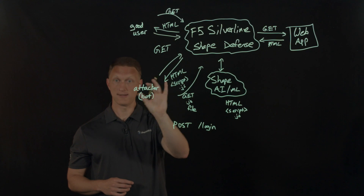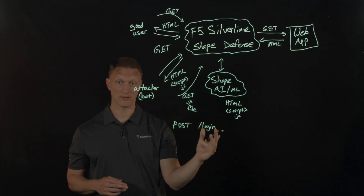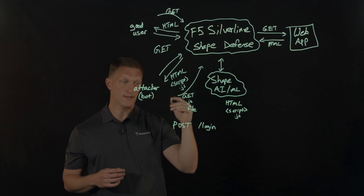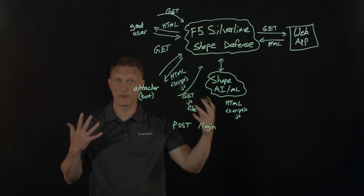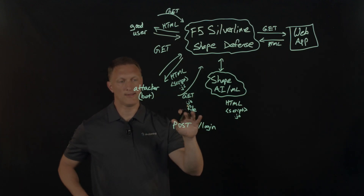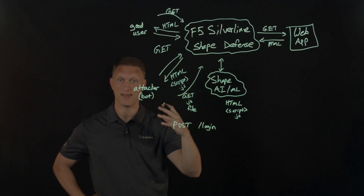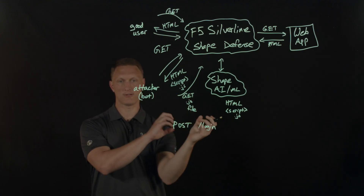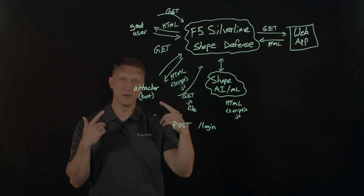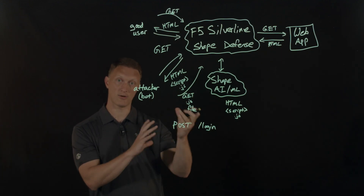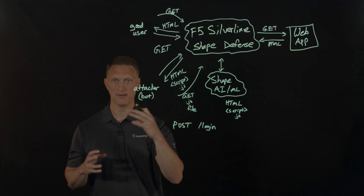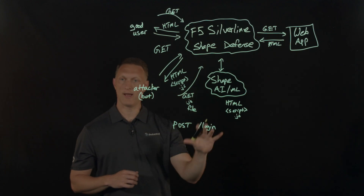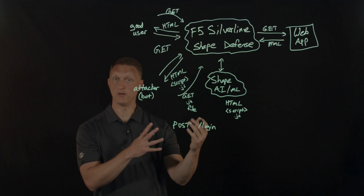There are a few different options available. You can drop the request altogether, which would cause a timeout for the attacker. You could redirect to a different page, or serve up different HTML code that you create yourself. This is something you can work with the Silverline team on to decide what strategy to use when responding to bad requests. Sometimes if you just drop the connection and they timeout, they'll clue in that they're being stopped and retool with a different attack vector. So sometimes you may just want to redirect to a different page so they don't know they're being blocked.